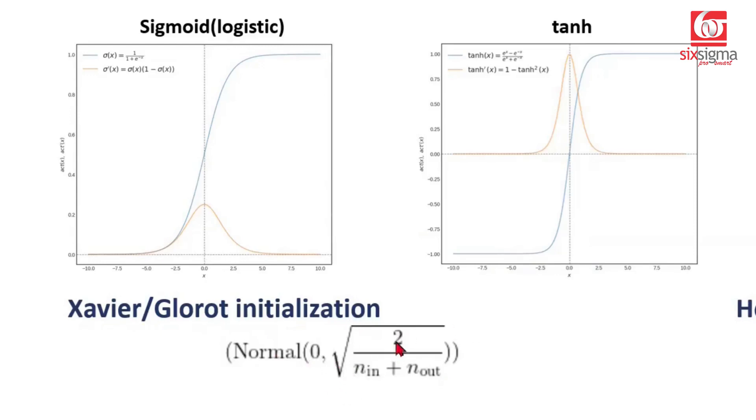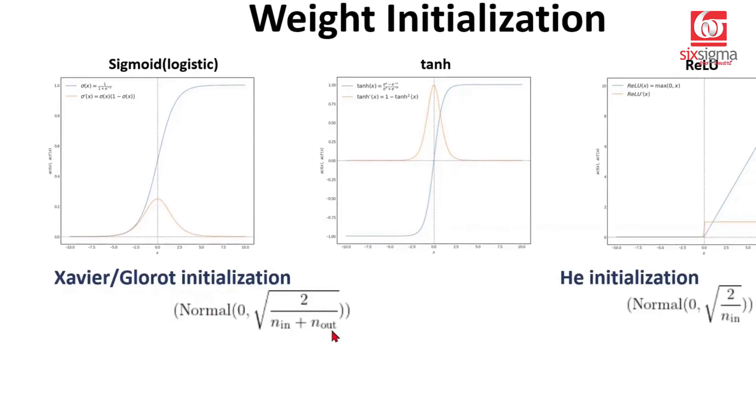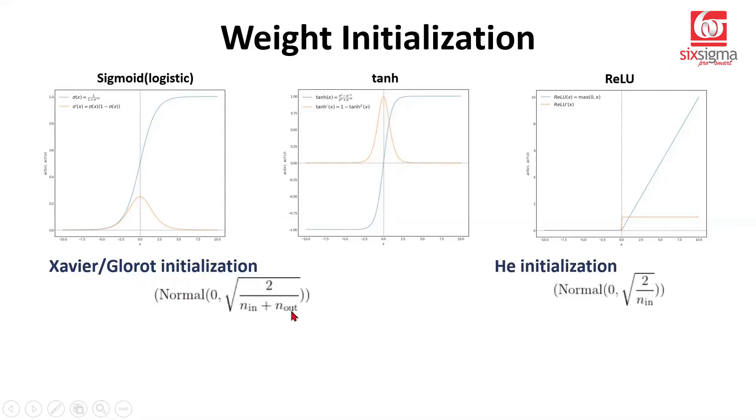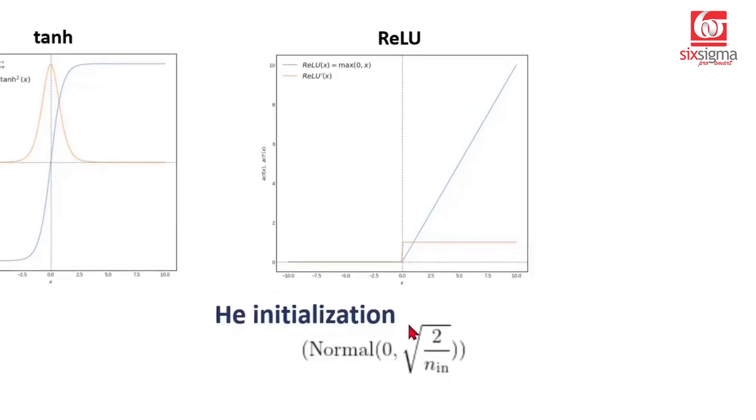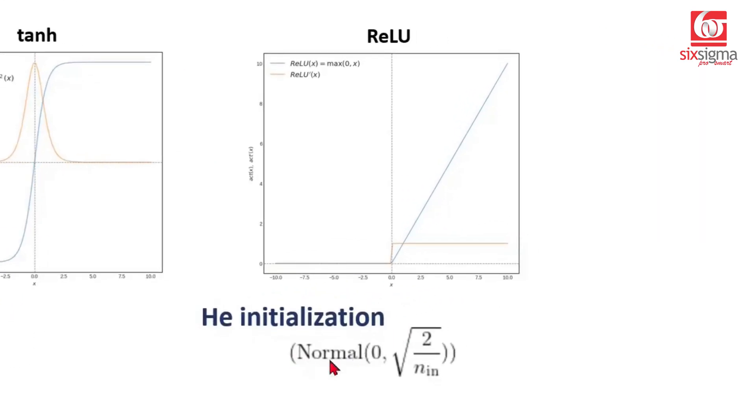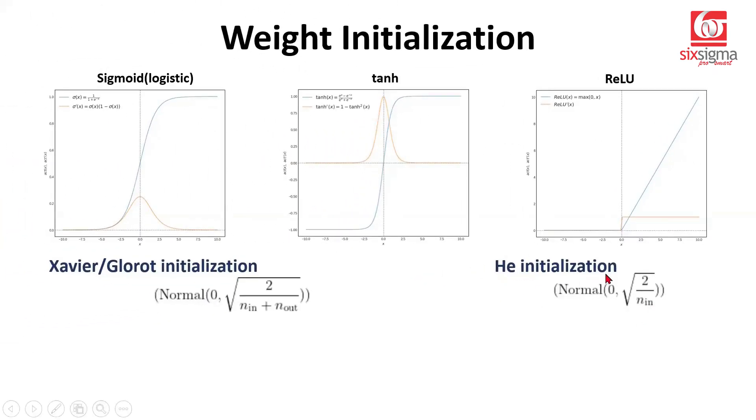What is suggested is that the weight should follow a normal distribution with mean zero and a standard deviation, which is given by the square root of two over number of inputs plus number of outputs. Inputs to a given layer and the outputs from that layer. In some cases, you will find this written as one over number of inputs as well. Both the variants are equally popular. Whereas for ReLU, the recommendation is popularly known as He initialization. And this suggests that the weight should follow a normal distribution with mean zero and standard deviation, which is a square root of two over number of inputs.